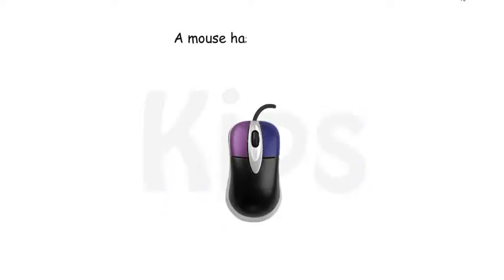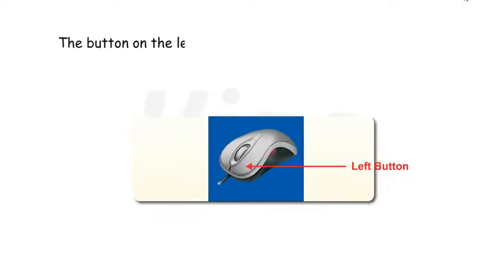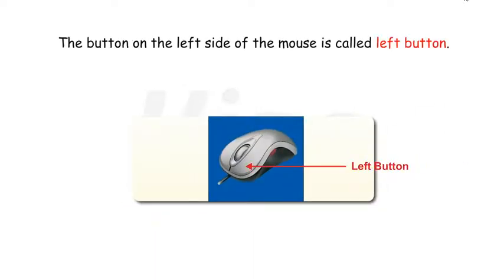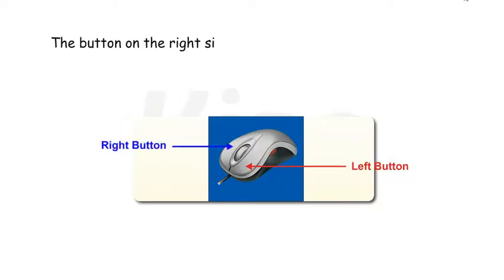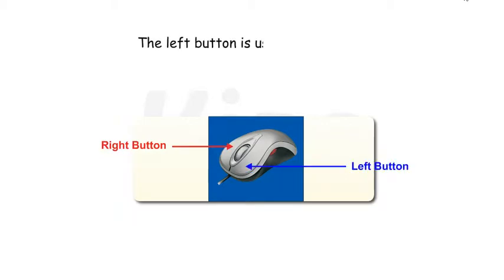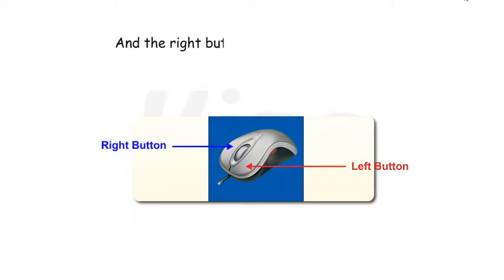A mouse has two buttons. The button on the left side of the mouse is called the left button. The button on the right side of the mouse is called the right button. The left button is used for left click and the right button is used for right click.